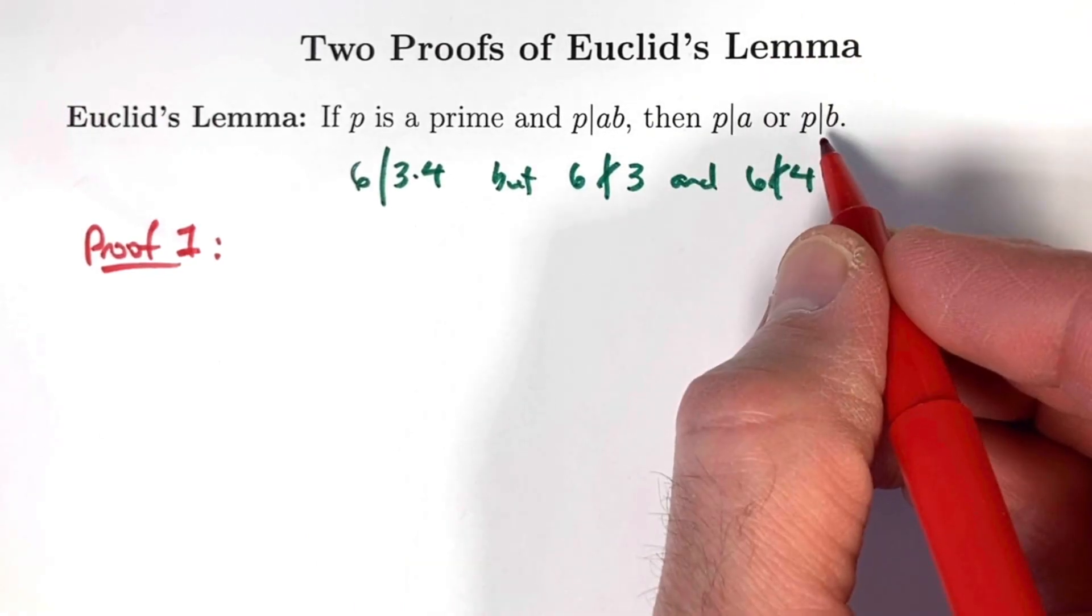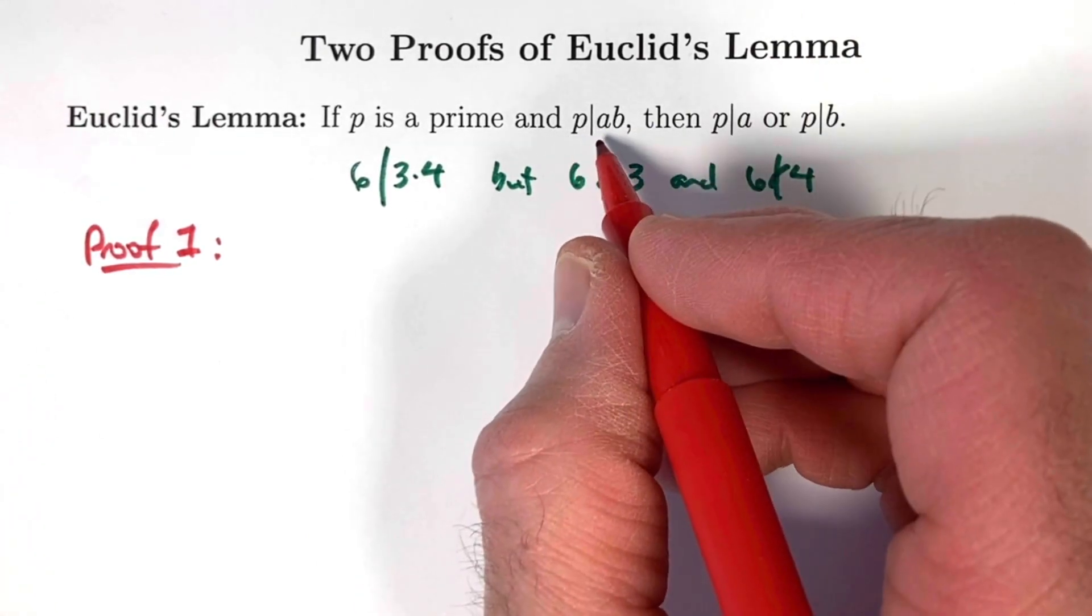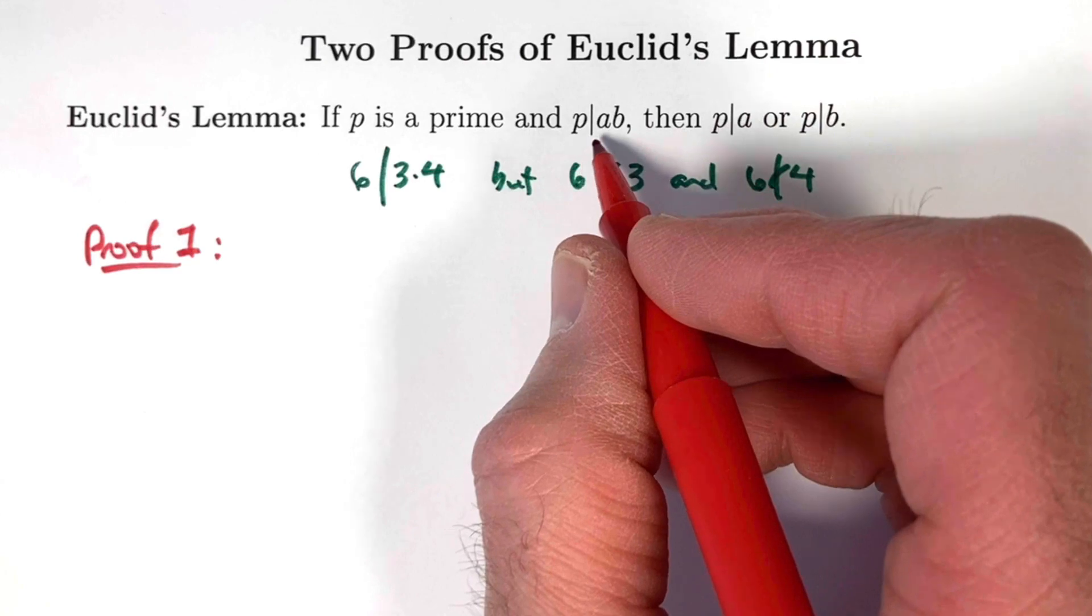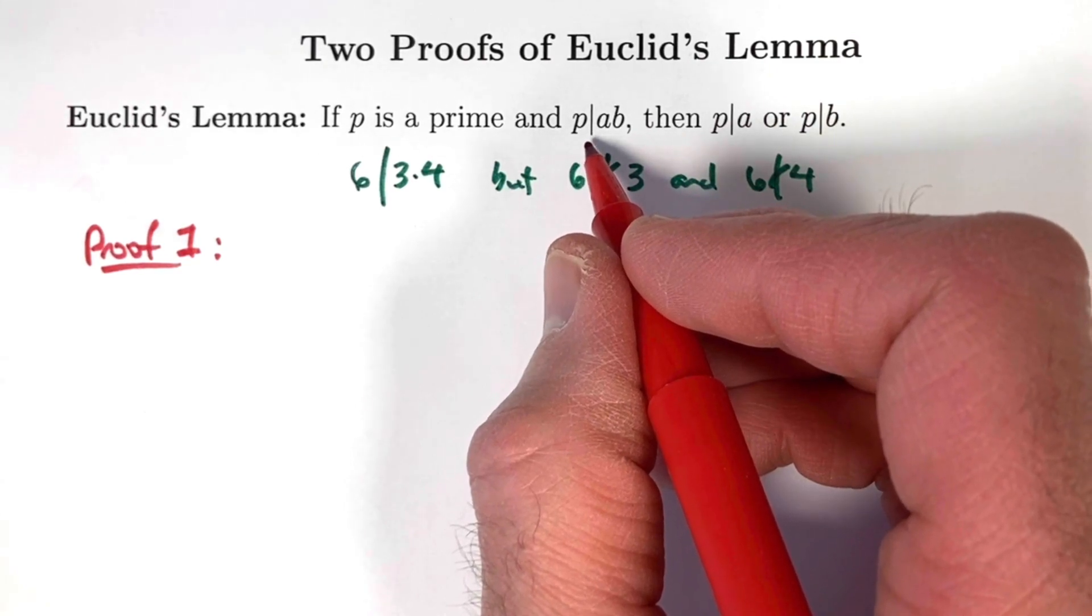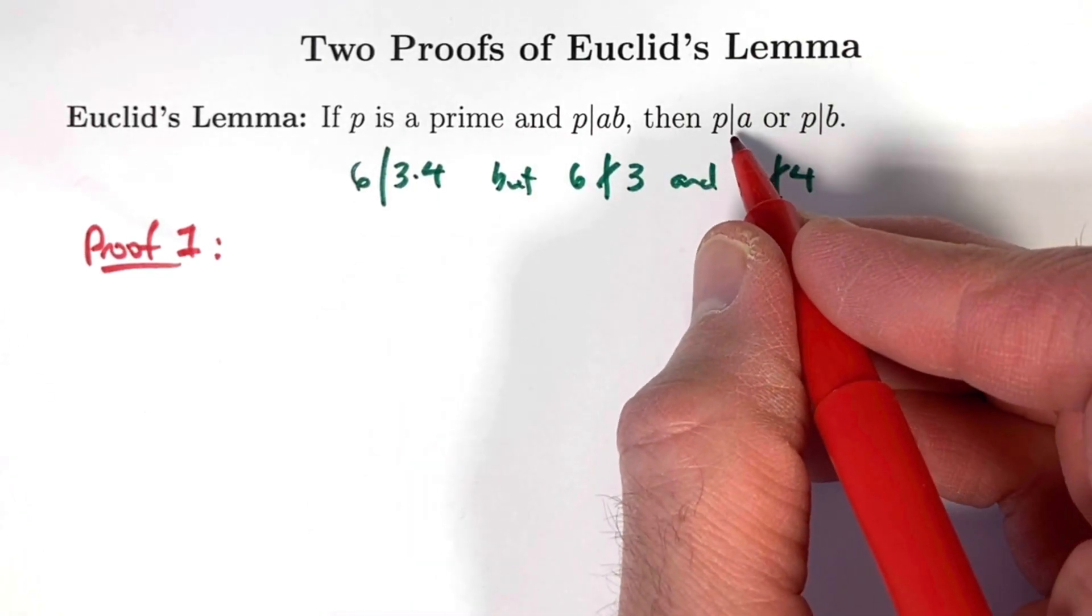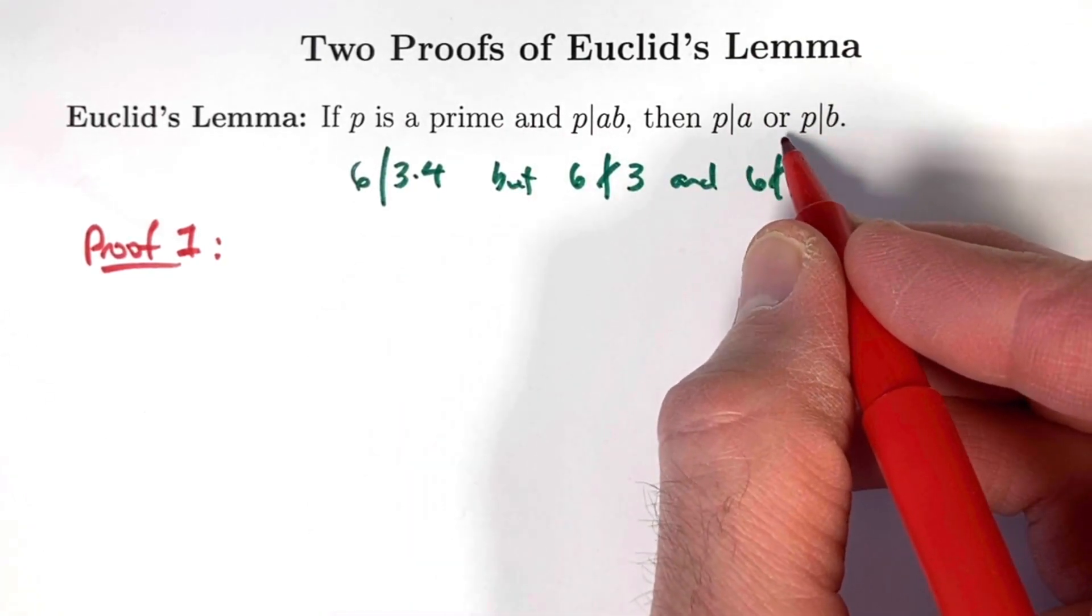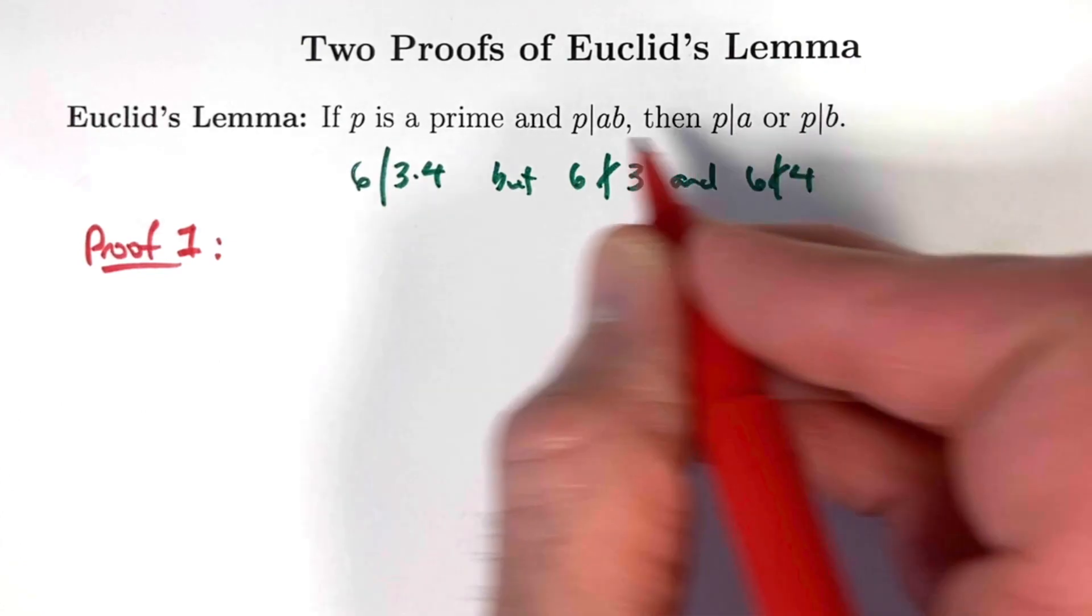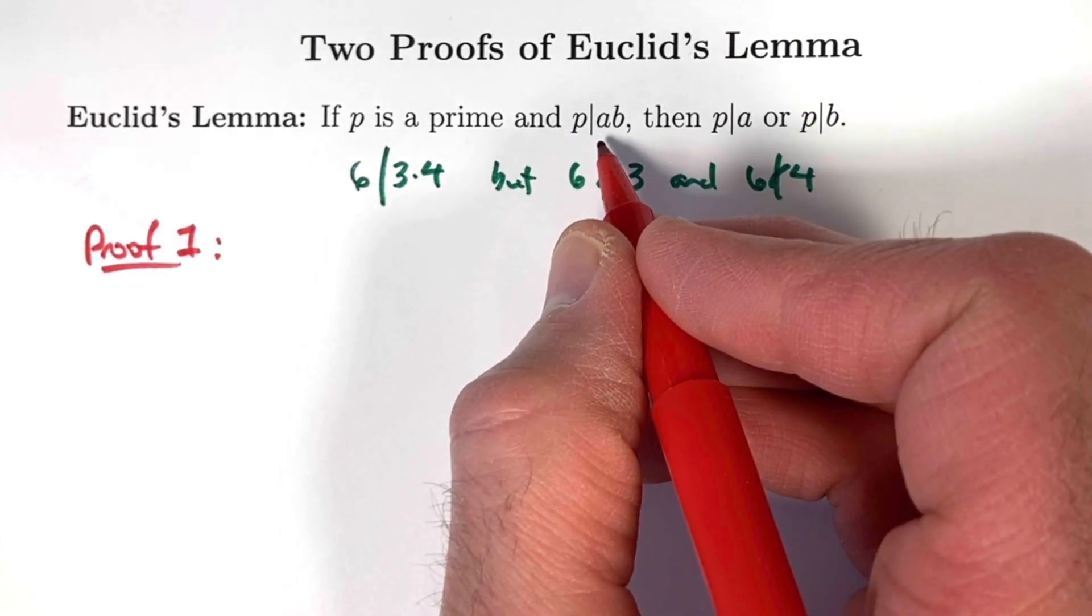We're going to prove this by something called the contrapositive. We're going to assume the opposite of the conclusion and show the opposite of the assumption. We're going to assume p does not divide a and p does not divide b and show p does not divide a times b.